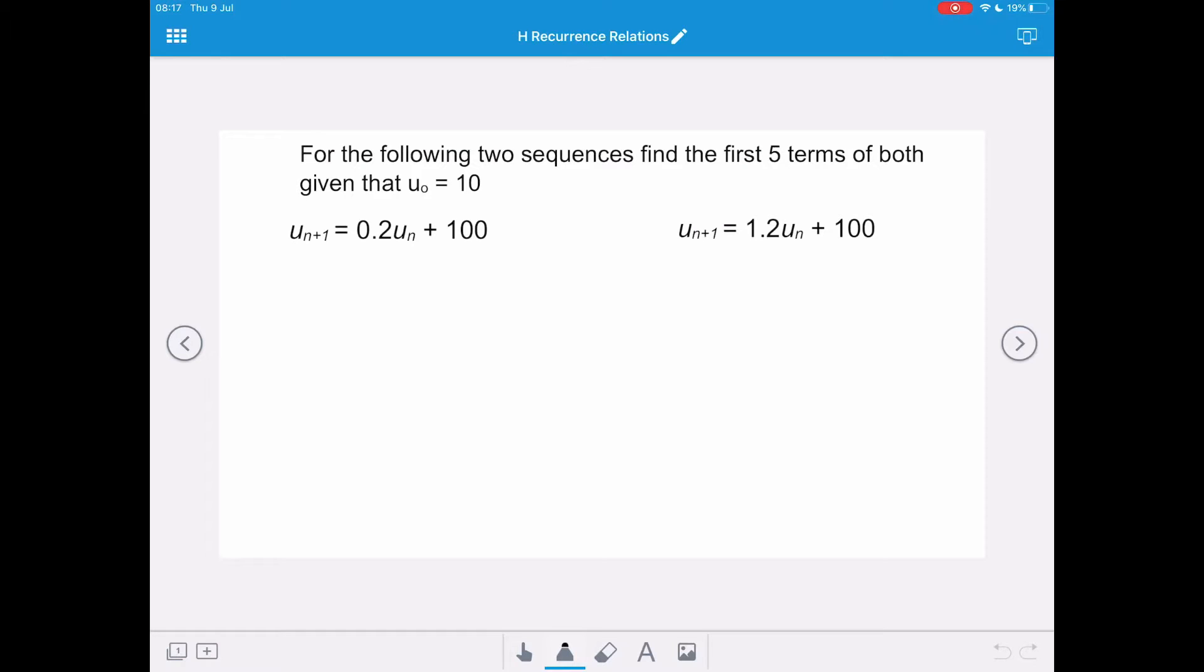For the following two sequences, we want to find the first five terms of both given that u₀ equals 10. Looking at the left-hand sequence first, we're going to substitute in the value for u₀ to find out what u₁ is. So u₁ is going to equal 0.2 times 10 plus 100, and that gives us a u₁ of 102.